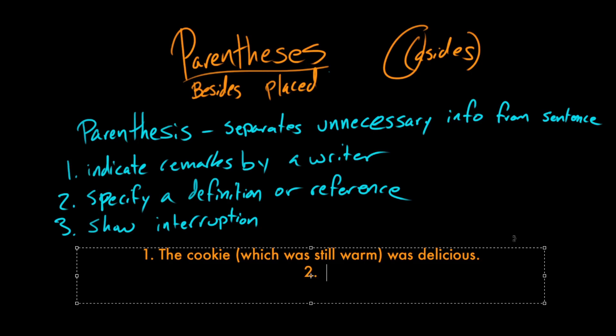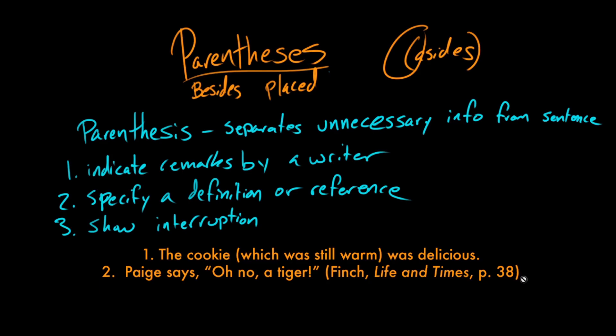So the second way in which you use parentheses is to specify a definition or reference. So let's say I wanted to quote Paige's as yet unwritten autobiography. So what I'm doing here is I'm using this parenthetical aside to cite where in her book she said, oh no, a tiger. So let's say this is an excerpt from some essay that I'm writing about Paige's life and times, which I've italicized here because it is a book. So what I'm doing here is I have the quote, and then in order to say where that reference comes from, I give the author's last name, the name of the book, and then page 38. And all of that is inside parentheses like so. That's the second use of the parentheses.